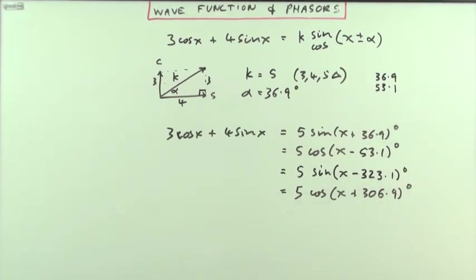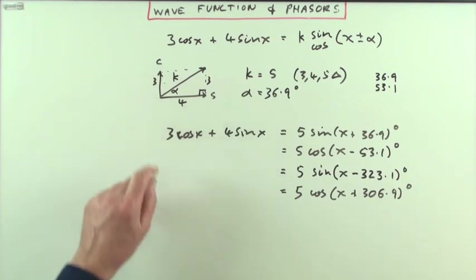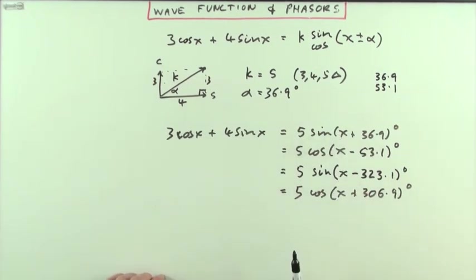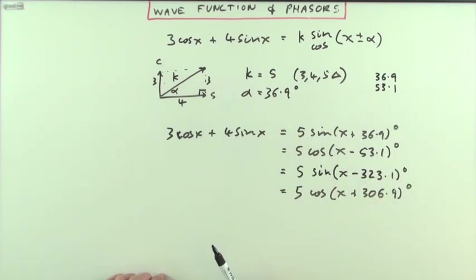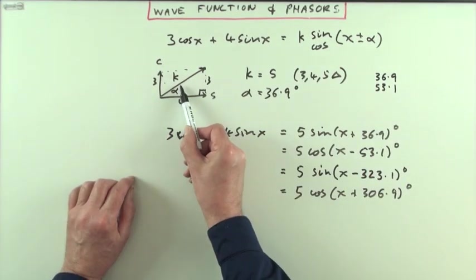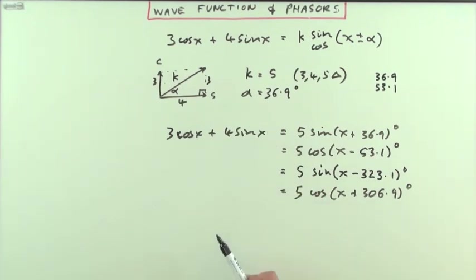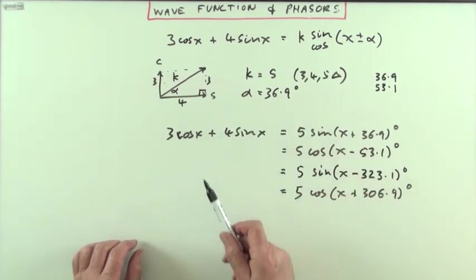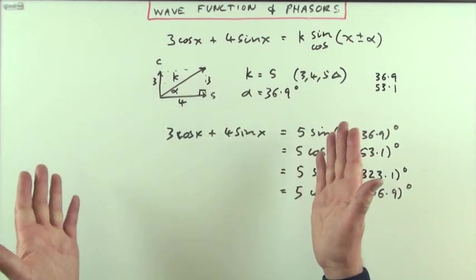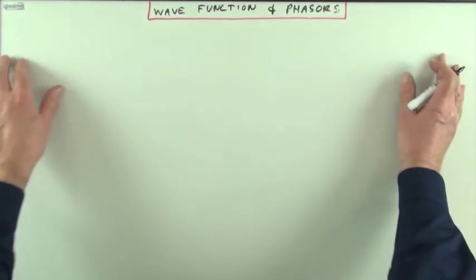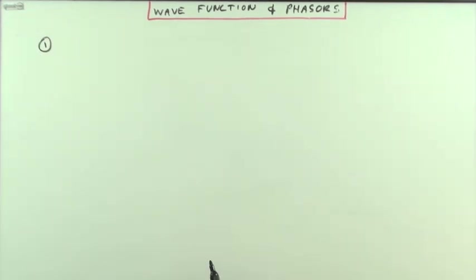The diagram also shows which form is best — for instance, which has the smallest acute angle. In this case, that would be the sine form: 5sin(x + 36.9°), which also happens to have the smallest positive phase. Two further examples follow, and then there are two for you to try yourself.